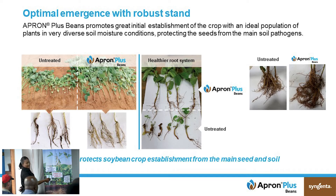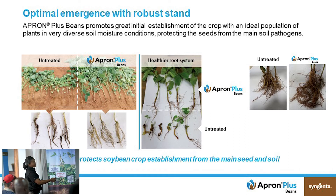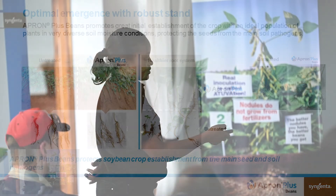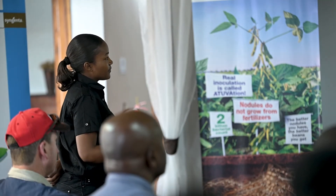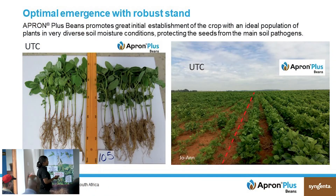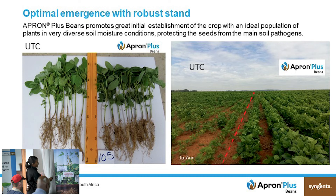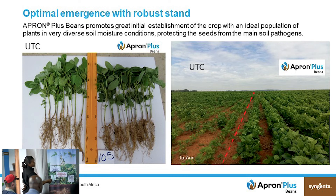These pictures in the corner are from the same Zambian trial. This is the untreated, and if you look at the treated plot, the root biomass — these were taken 56 days after planting — the root biomass on the Apron Plus Beans treatment was better than the untreated. These roots are also from Zambia, and this is the South African trial showing the same root biomass difference.